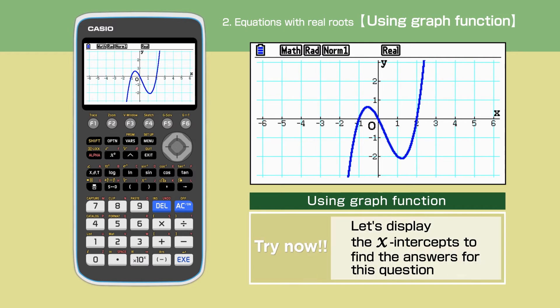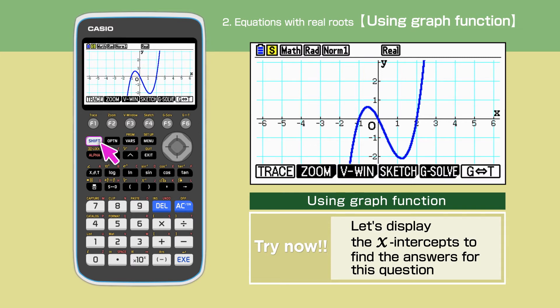To find where the function value is 0, we need to find the x-intercept, also known as the root. Press Shift to access the command menu. Press F5 to display G-Solve, then press F1 root.